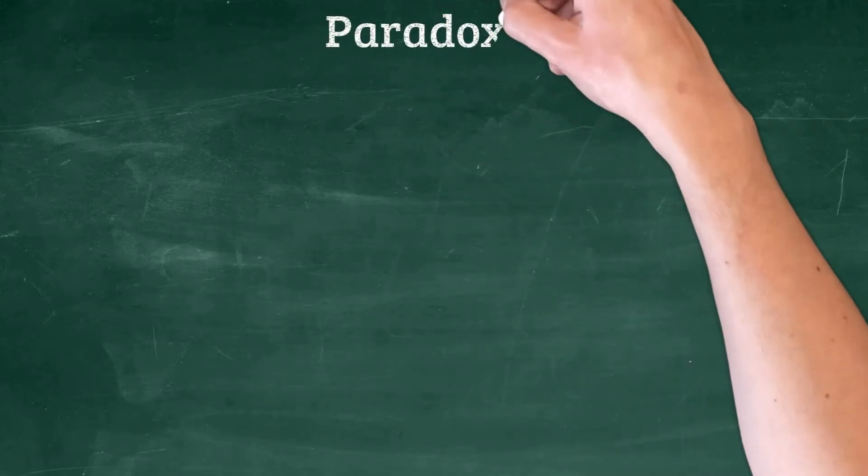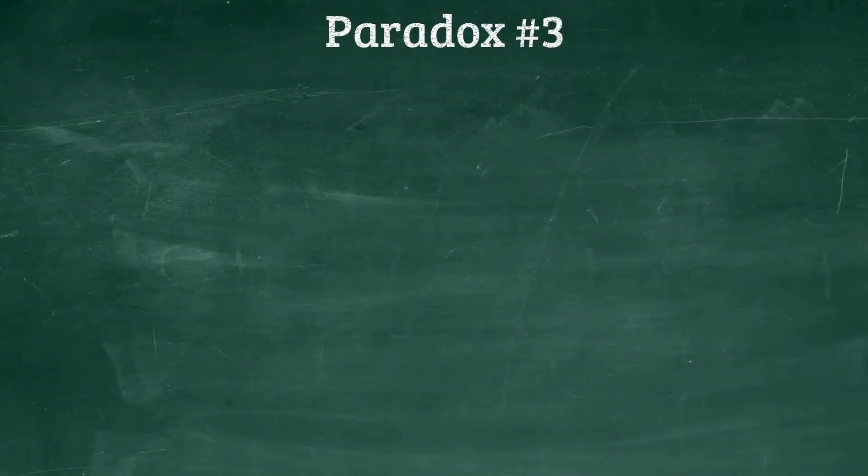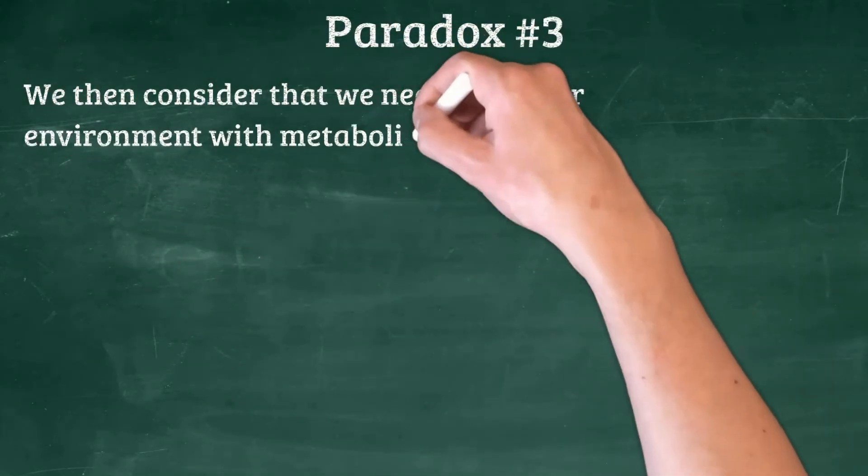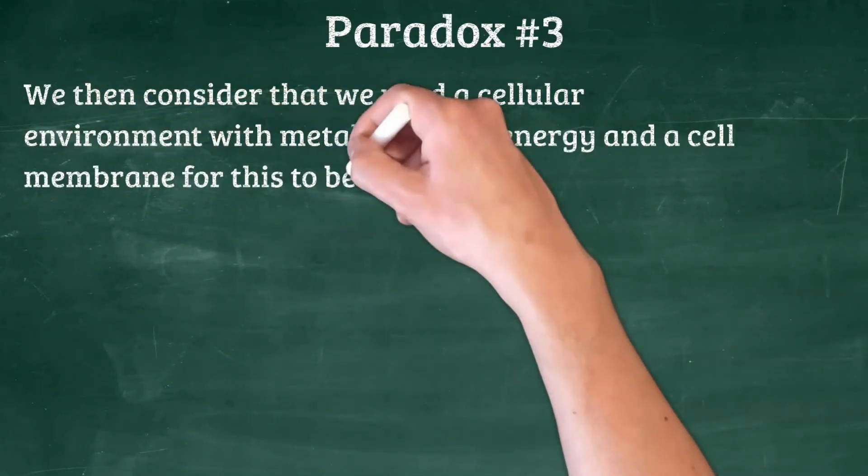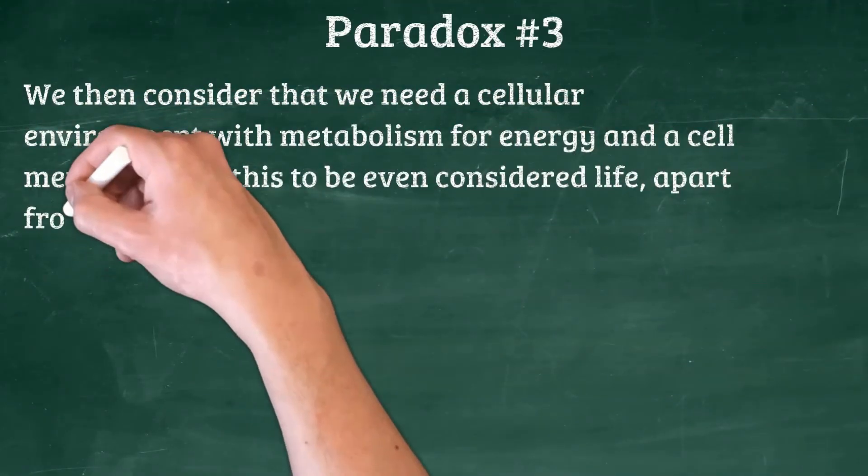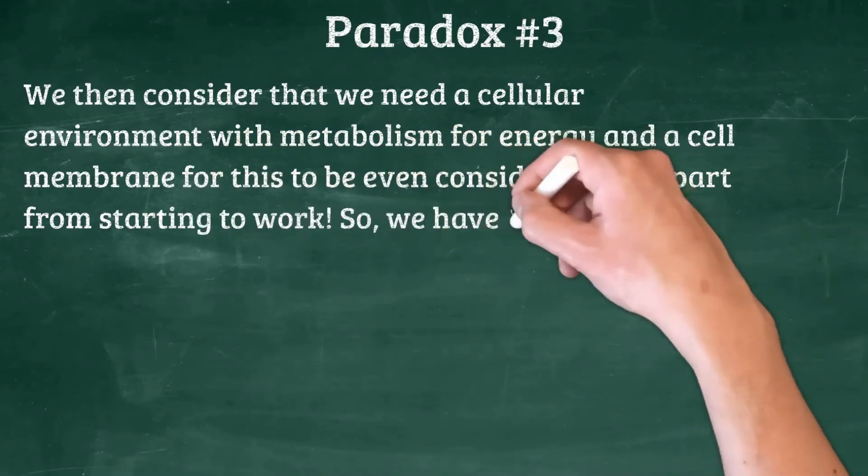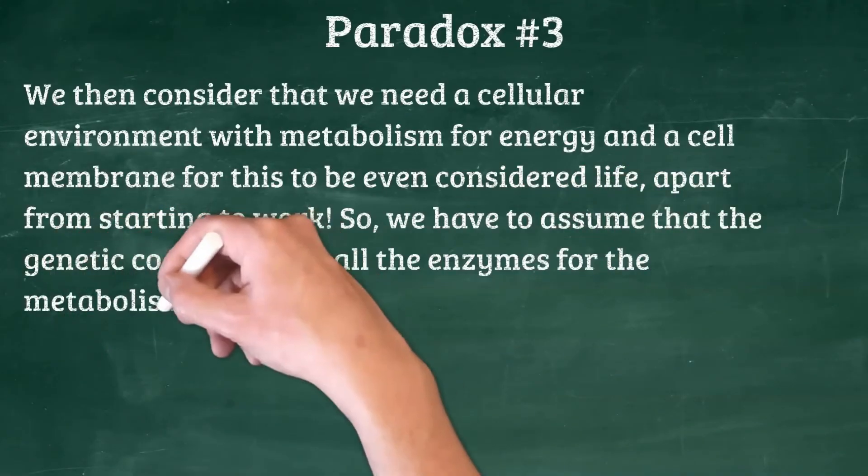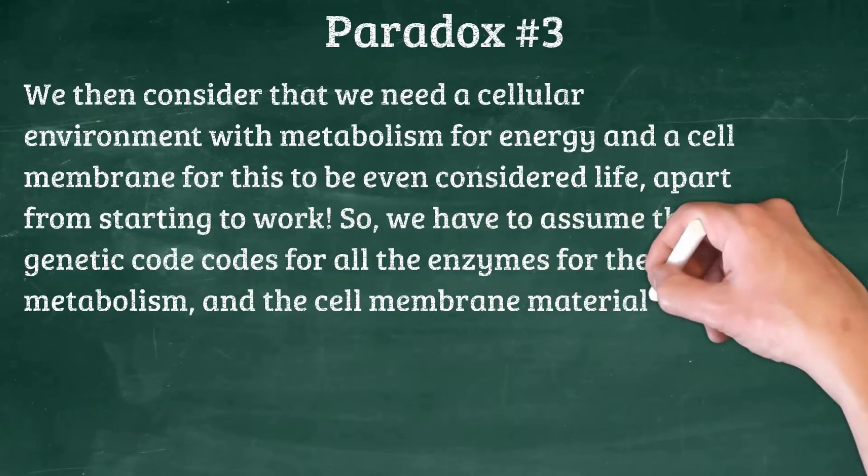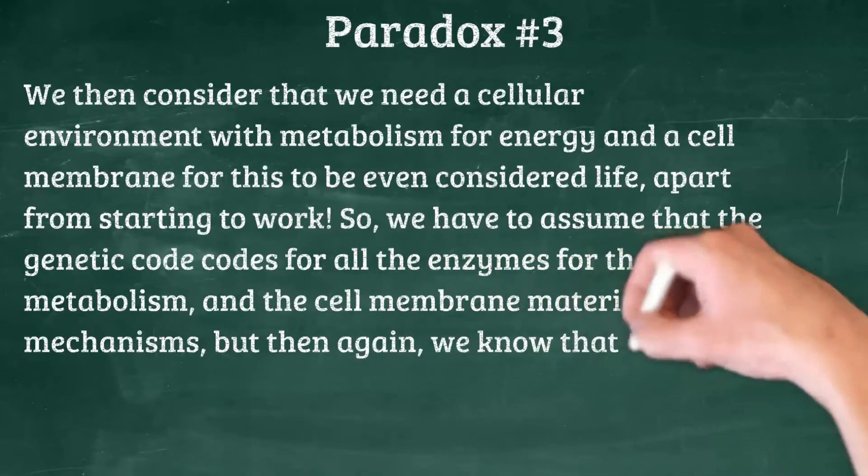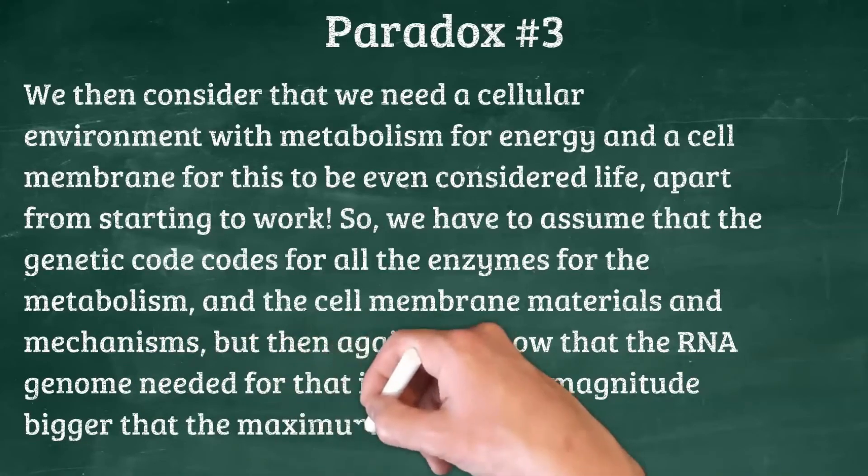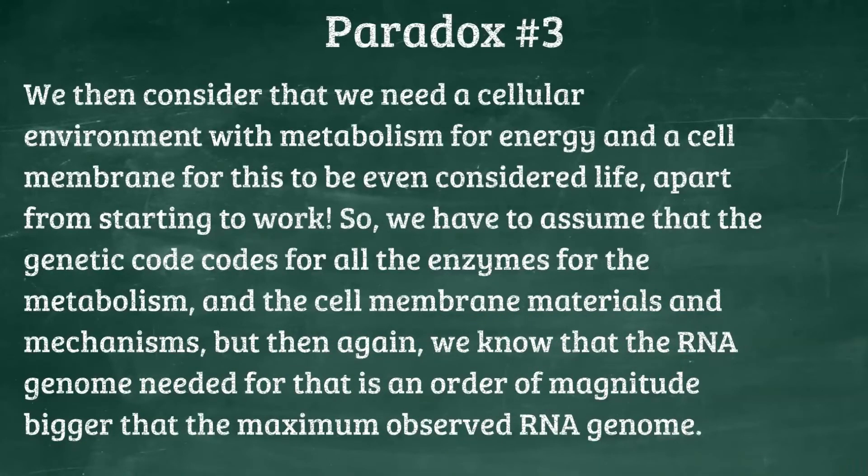Paradox number three: we need this cell to metabolize. And we need a cell membrane. And since we need those, we really need a pretty big genome. And once we need a pretty big genome, we know that this will not be sustainable, given the maximum size of RNA genome that we know of today. So the solution for the short genome is to be a big genome. Seems like the third paradox to me.